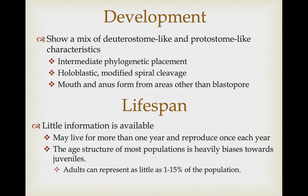As their phylogenetic placement suggests, they show a mixture of deuterostome and protostome-like characteristics. They show holoblastic, spiral-like cleavage, but it has been modified to some degree — not typical spiral cleavage. The blastopore doesn't clearly form the mouth or the anus; both are formed in different areas of the developing embryo. Very little is known about their lifespan; they may live more than one year and reproduce once a year for a couple of years, but it's not really clear.